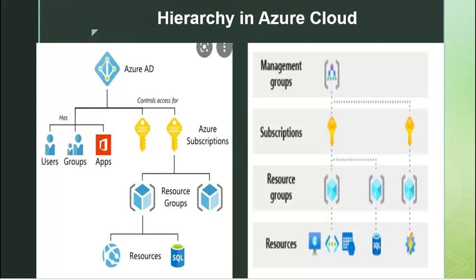One more important point: under a management group we can have multiple subscriptions, however one subscription can only be attached or associated with one management group, one active directory, or one account in Azure. For example, if a company ABC has the domain abc.com, that will be the common Azure Active Directory tenant, and there may be several subscriptions attached to that account or directory. But one subscription cannot be attached to multiple directories or accounts.